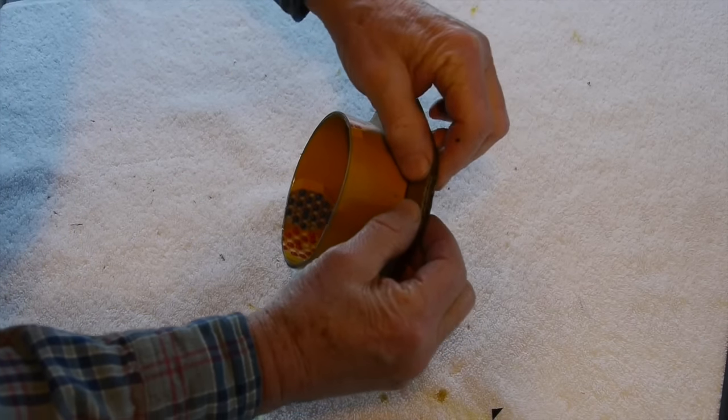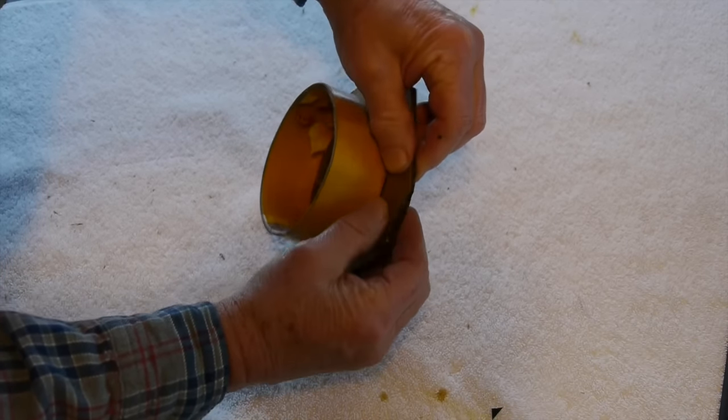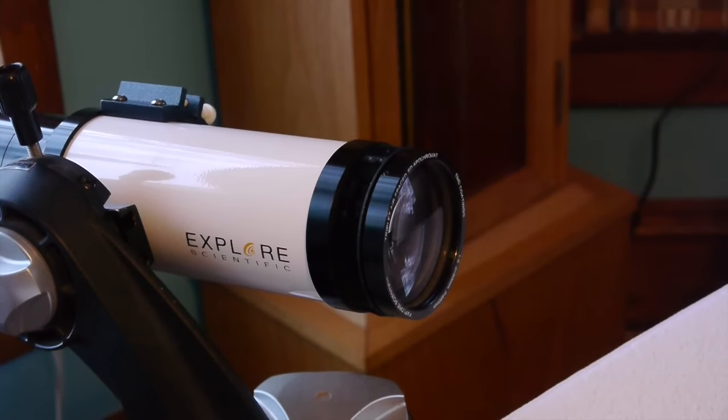Incidentally, the shiny side of the filter material goes towards the telescope. The dull side is what faces the sun.